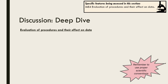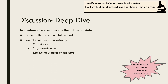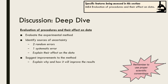The second part of the discussion is where the procedures are evaluated, including their effect on the data. This involves evaluating the experimental method and identifying sources of uncertainty. In your report you need to identify two sources of random error and one systematic error, and make sure that you explain their effect on the data. Just identifying errors or merely stating that they will affect the data without explaining how is not enough. Also, you shouldn't be discussing things like running out of time, making mistakes, reading measurements, or dropping equipment. After identifying sources of error, suggest improvements to the method — why and how will it improve the results? Embedded within your evaluation of the procedure and discussion of errors, you also need to discuss the data's reliability, precision, accuracy, and validity.